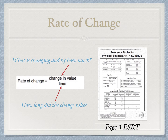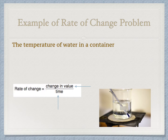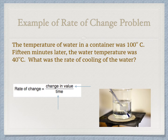The best way to do this is to jump right into a problem. Here's an example of a rate of change problem involving the cooling of water. The temperature of water in a container was 100 degrees Celsius; 15 minutes later the water temperature was 40 degrees Celsius. What was the rate of cooling of the water? We're going to imagine a beaker of water was heated to boiling and now the heat was shut off and it's cooling.